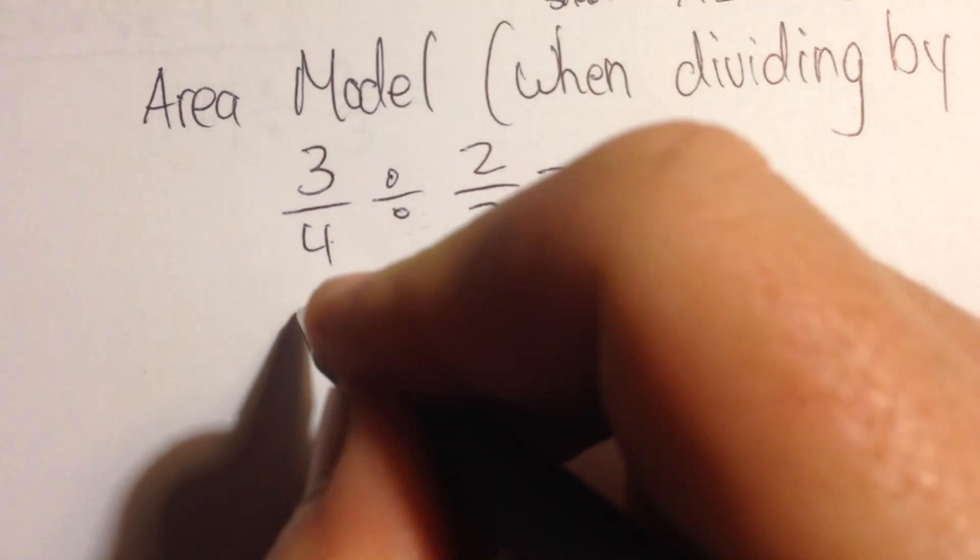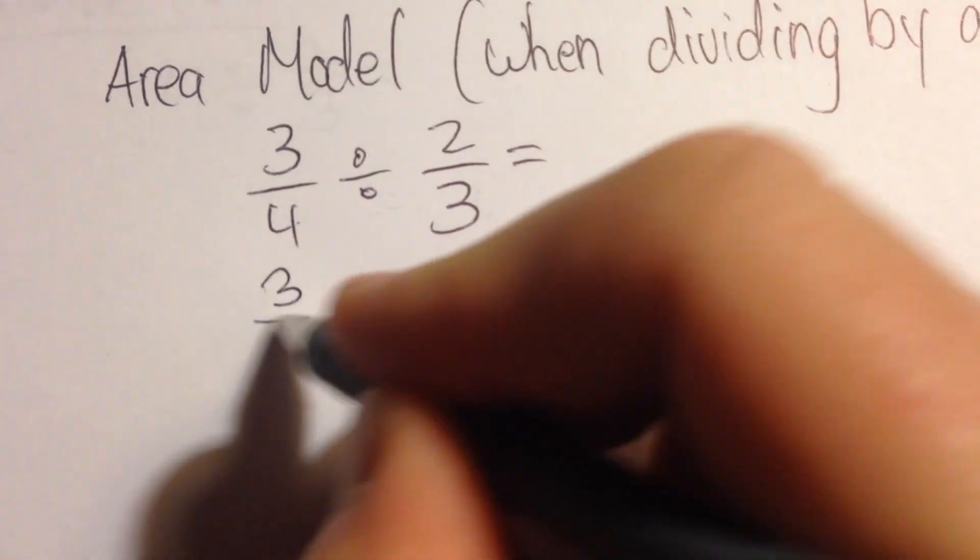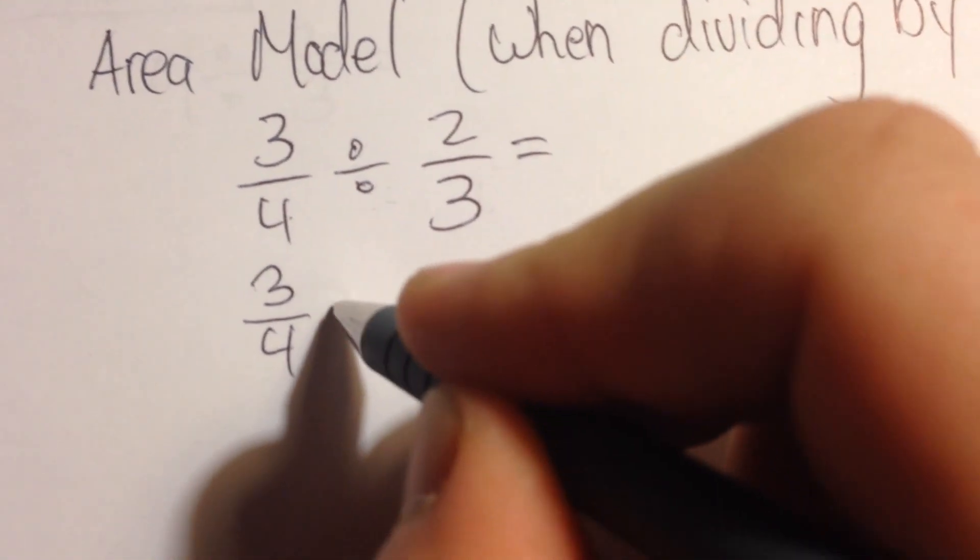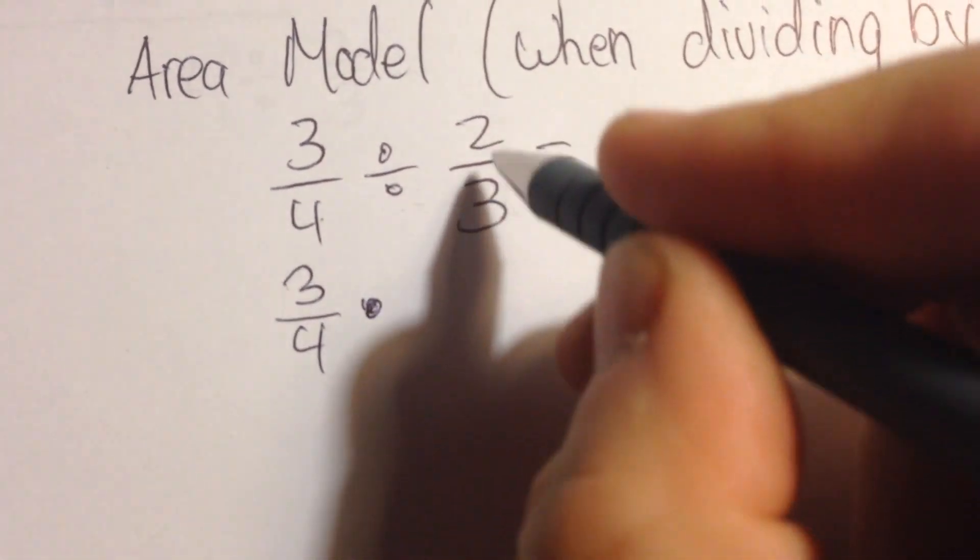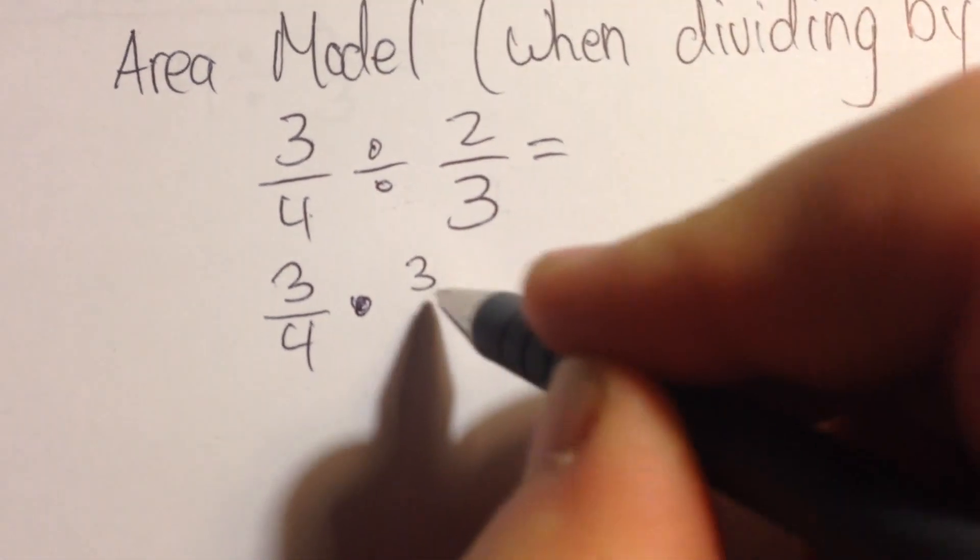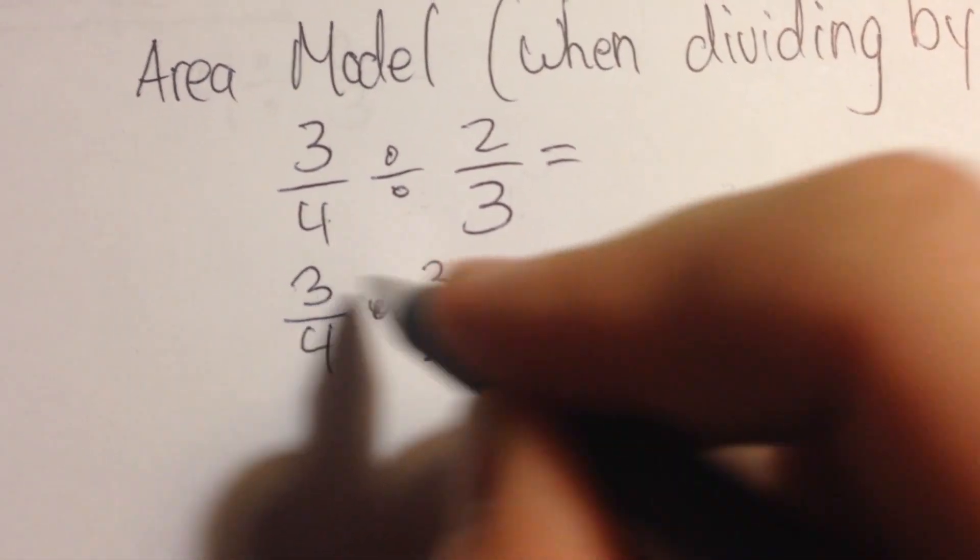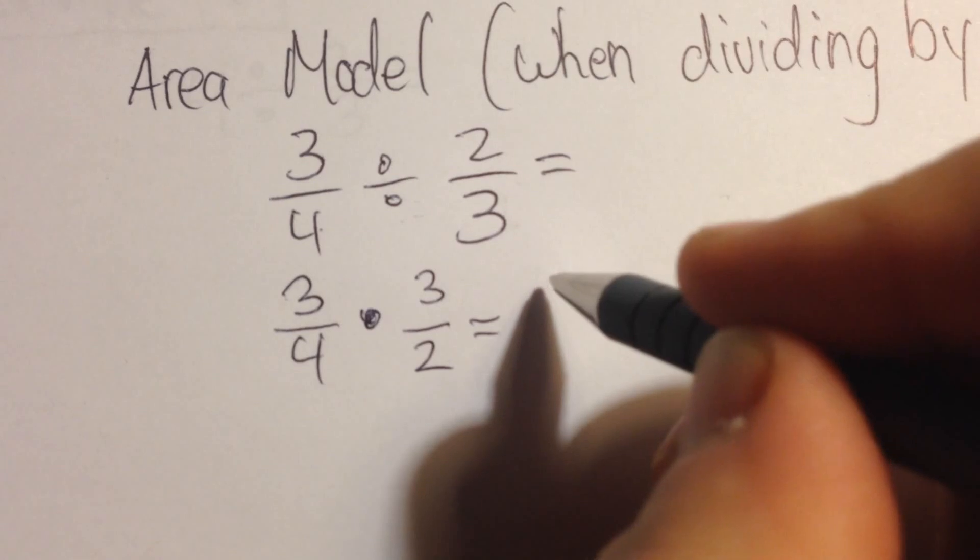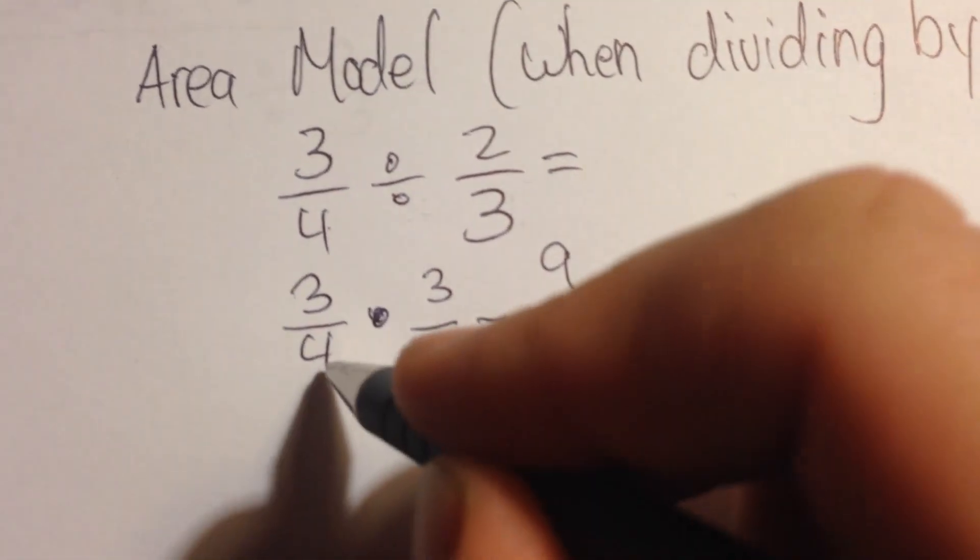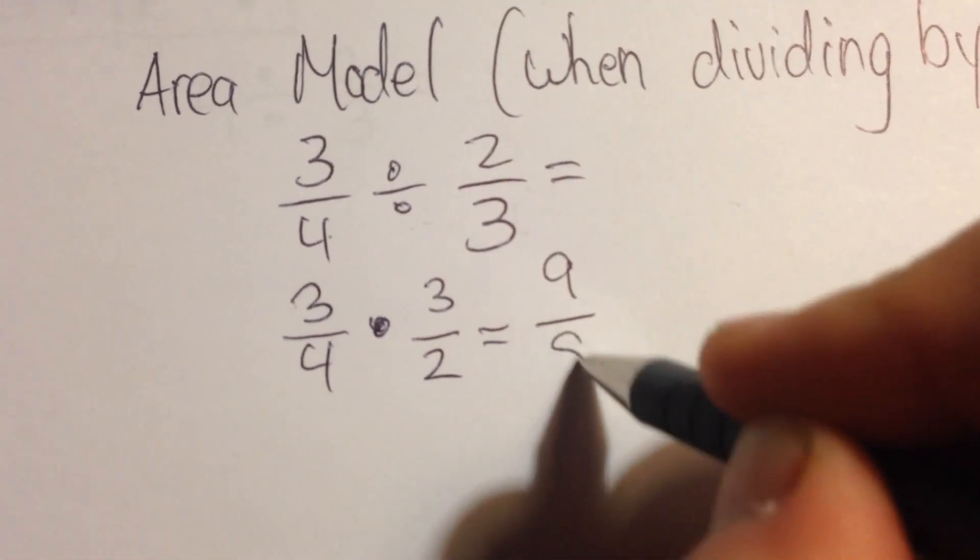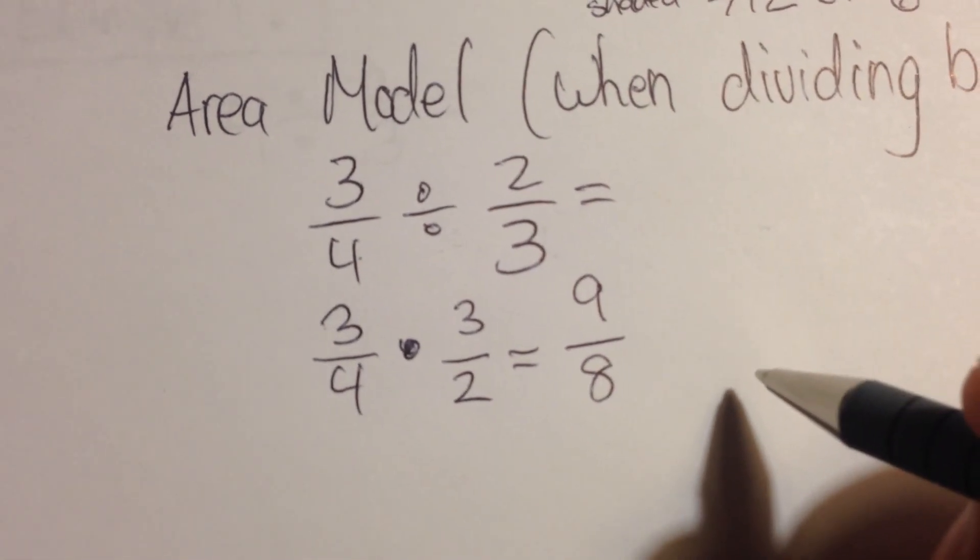I'll have 3 fourths times, if I write the reciprocal of my divisor, it would be 3 halves. And that's going to give me an answer of 3 times 3 if I multiply my numerator, and 4 times 2 of my denominator, 9 eighths.